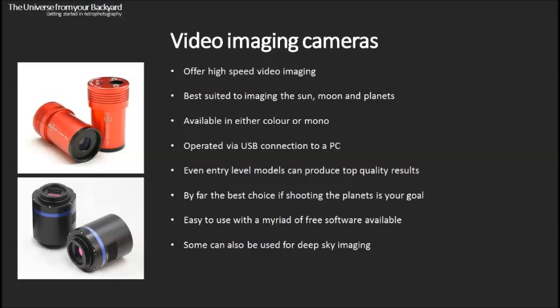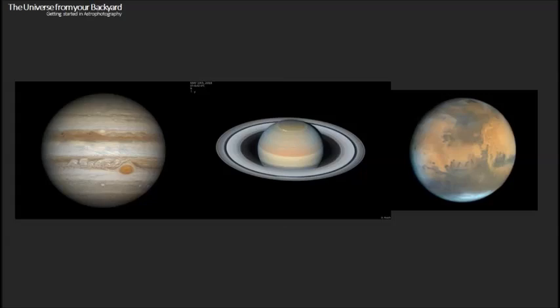These cameras are best suited for imaging the Sun, Moon and planets and are available in either one-shot color or mono. They're operated via USB connection and the software to run them is available for free download. If you're looking to shoot the planets, this is by far and away the best type of camera to choose — these are what all serious planetary observers use worldwide today. Here's a selection of my own images taken with one of these high-speed video cameras attached to a 14-inch telescope, showing what excellent results are possible.